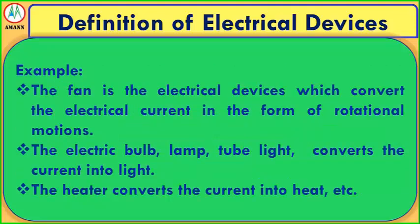Examples of electrical devices: the pump converts electrical current into rotational motion. The electric bulb, lamp, and tube light convert current into light. The heater converts current into heat, and others similarly convert electrical energy into different forms.